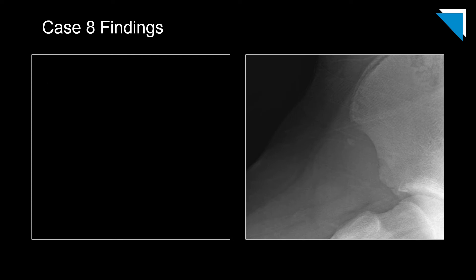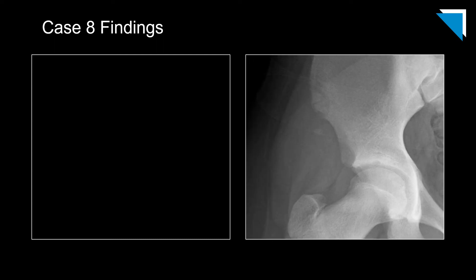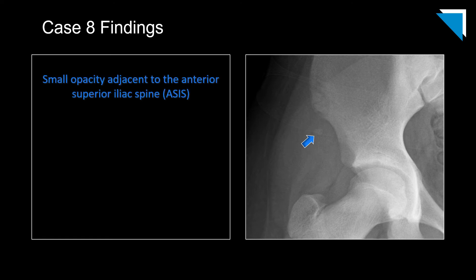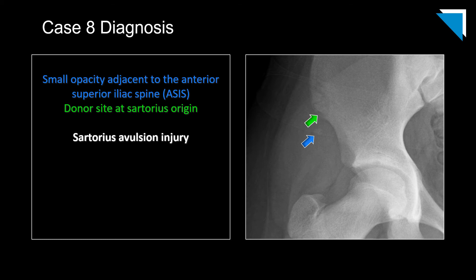This next case is a 13-year-old boy status post baseball slide who collided with the plate. Here is the frog-leg lateral view of the hip, coned down, and the corresponding AP view, also coned down. There is a small opacity projecting along the undersurface of the anterior superior iliac spine — an easy finding to miss or mistake for something in the overlying soft tissues. Upon closer inspection, we can see a small donor site in the anterior superior iliac spine at the sartorius origin. This is a sartorius avulsion injury, which results from forced extension of the hip.